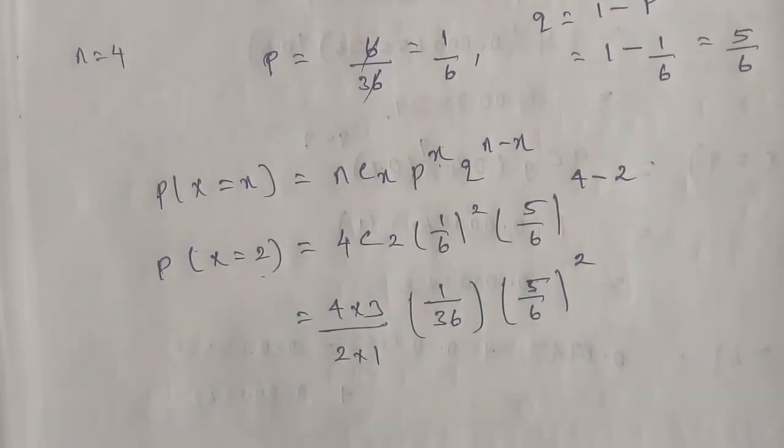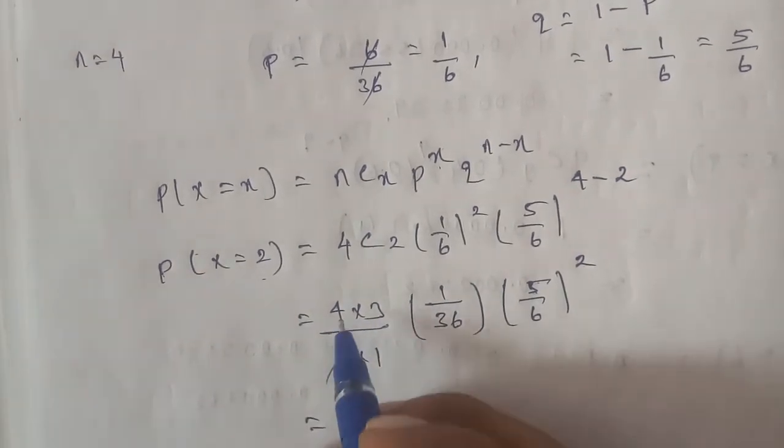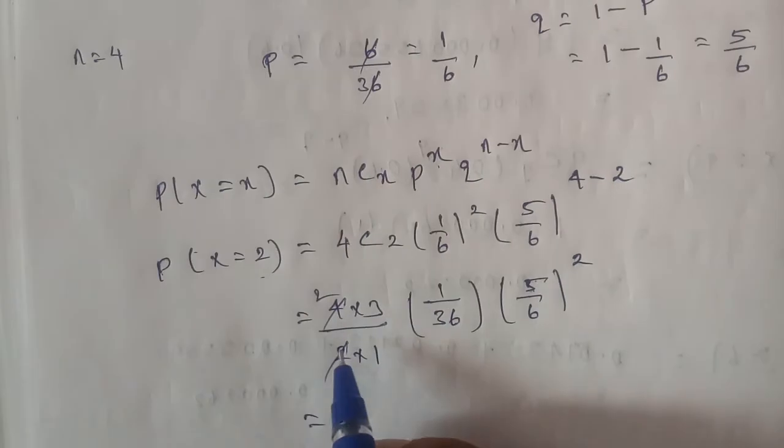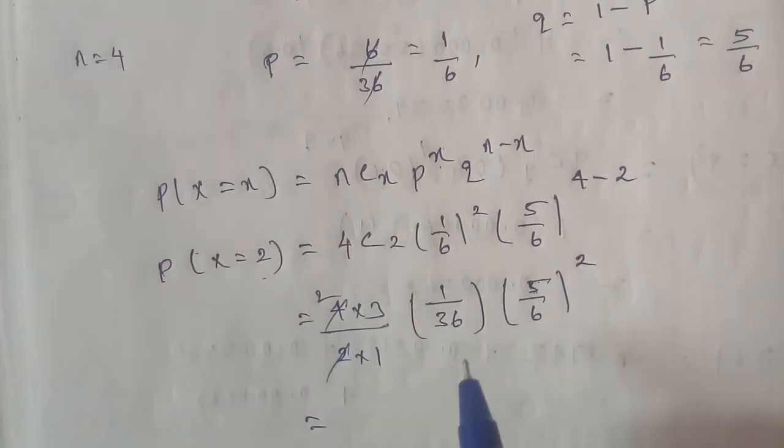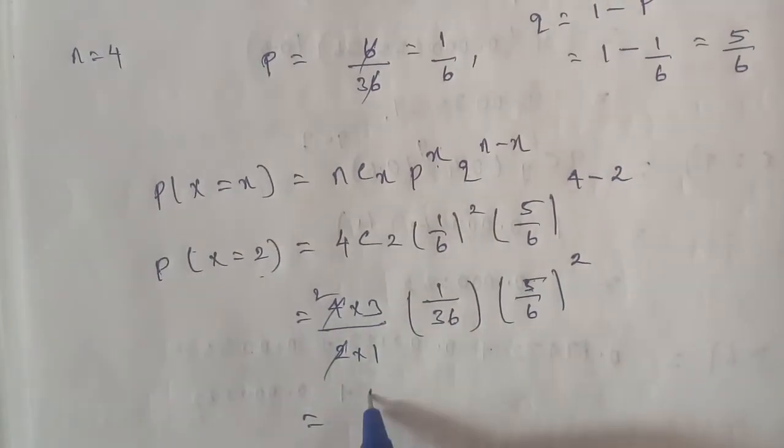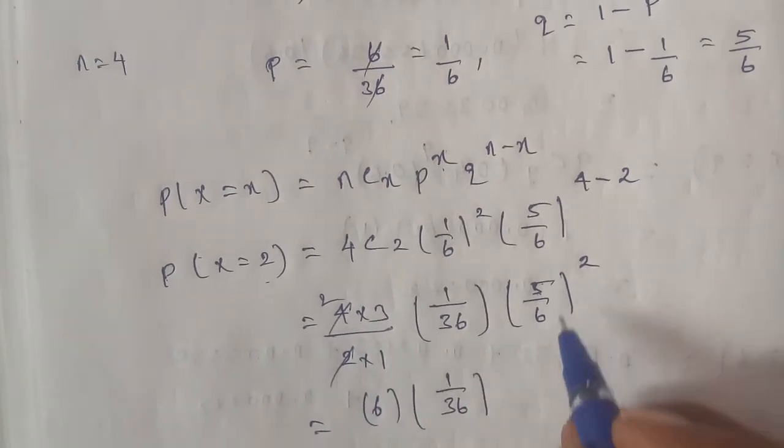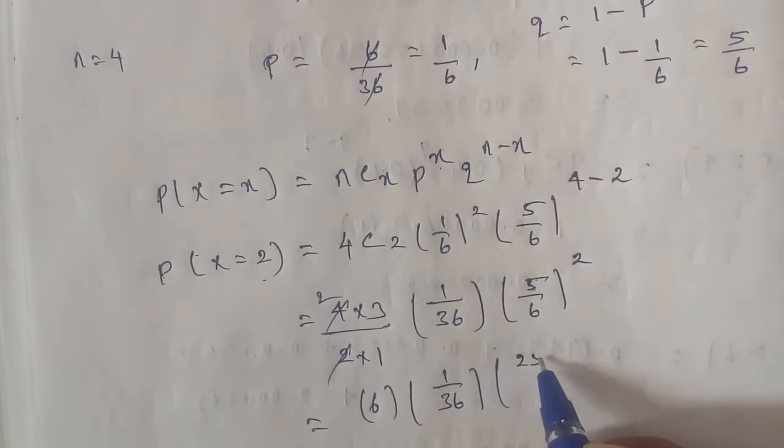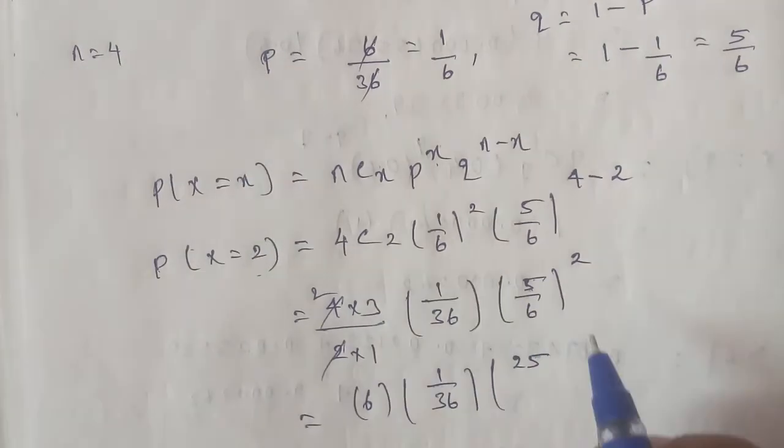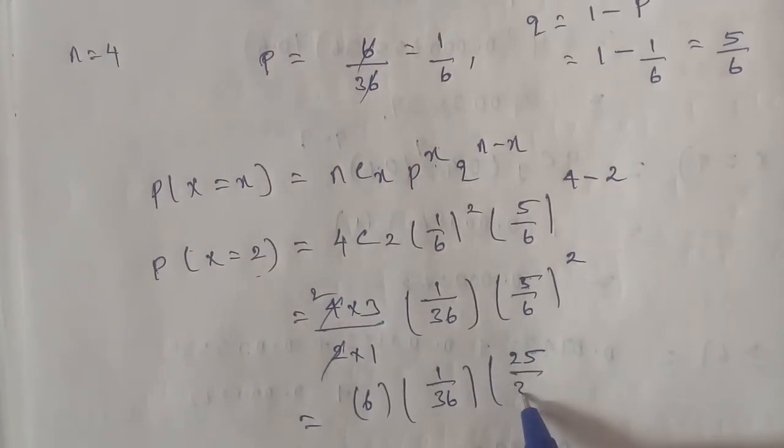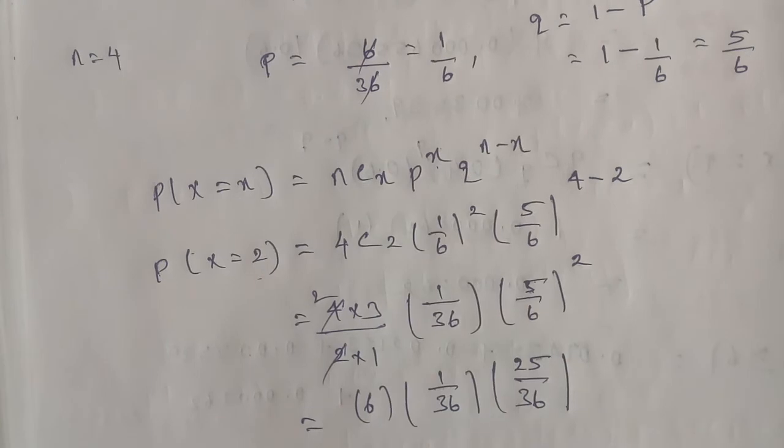If we cancel, 2 times 2 are 4, so remaining two threes are six. Next 1 by 36, 5 squared is 25, 6 squared is 36. Total, 6 times 6 are 36, so we can cancel.